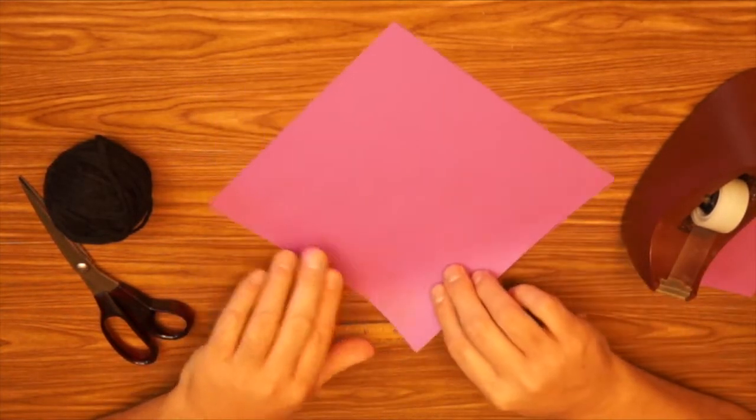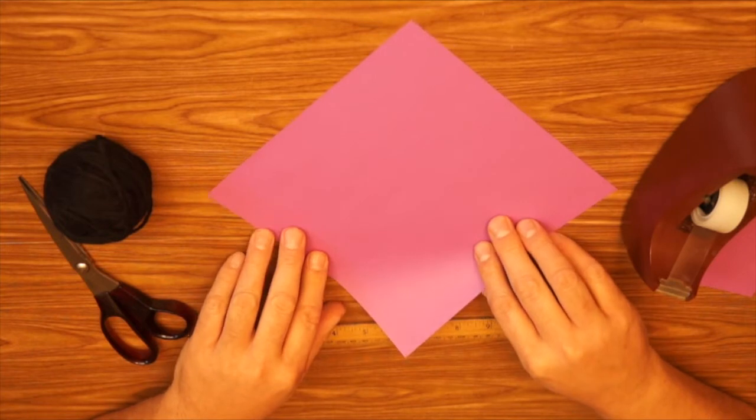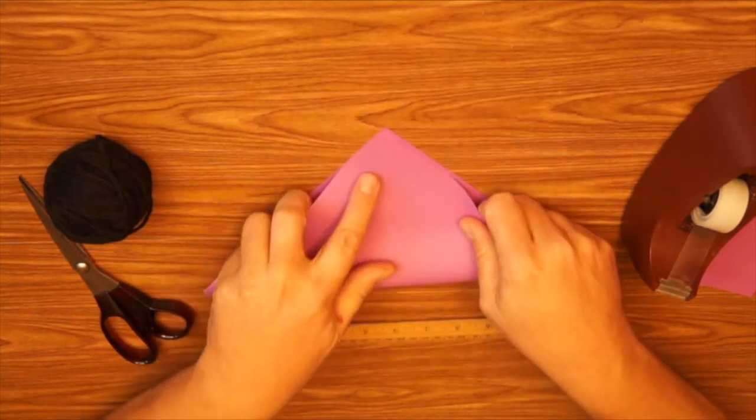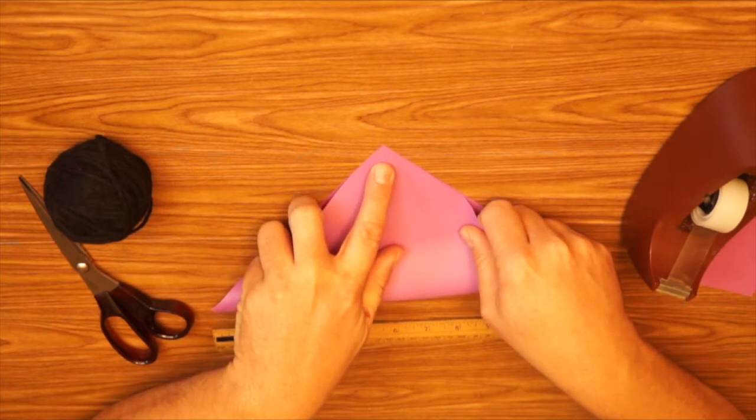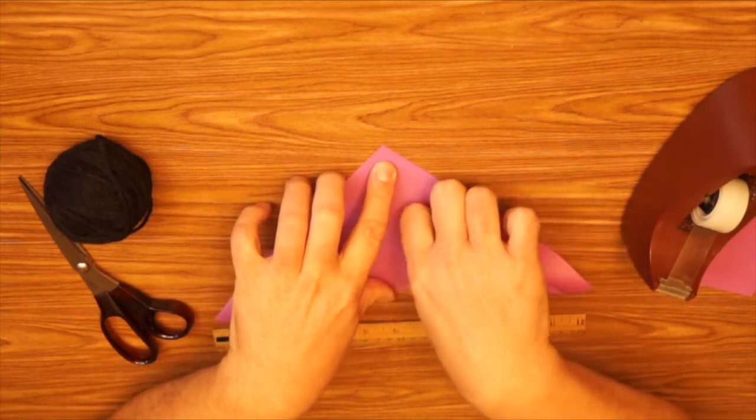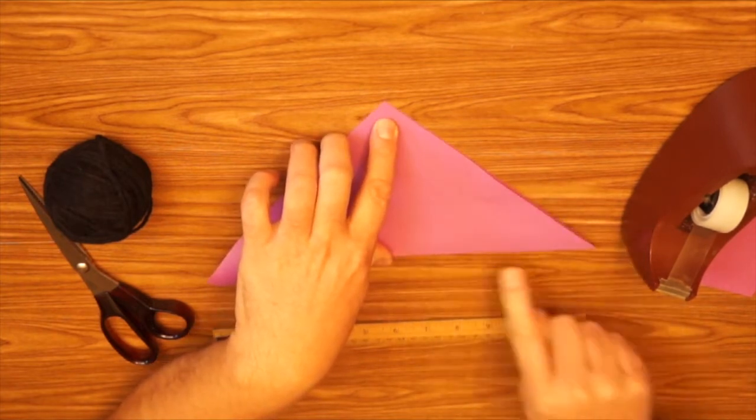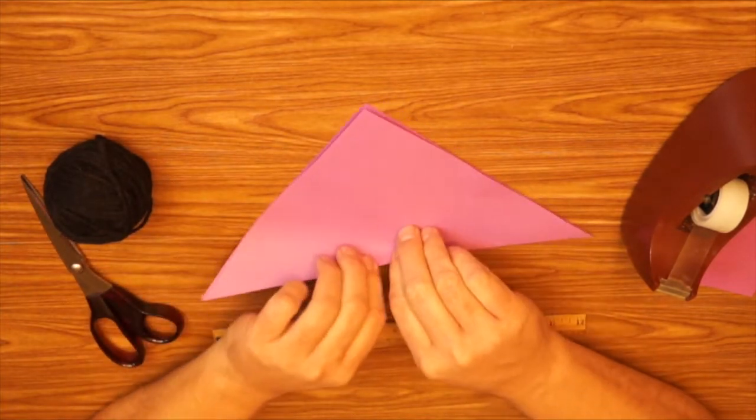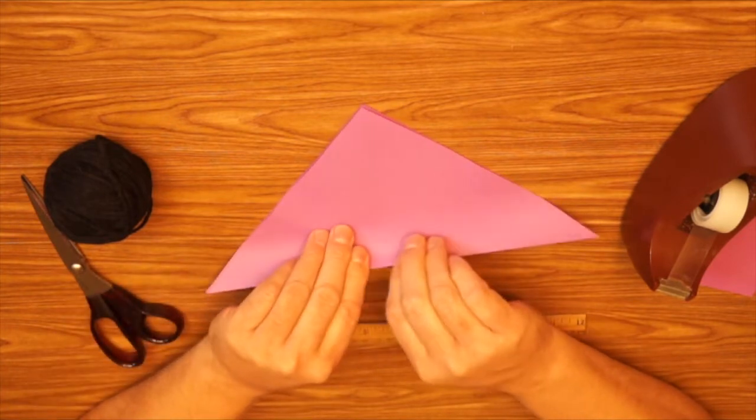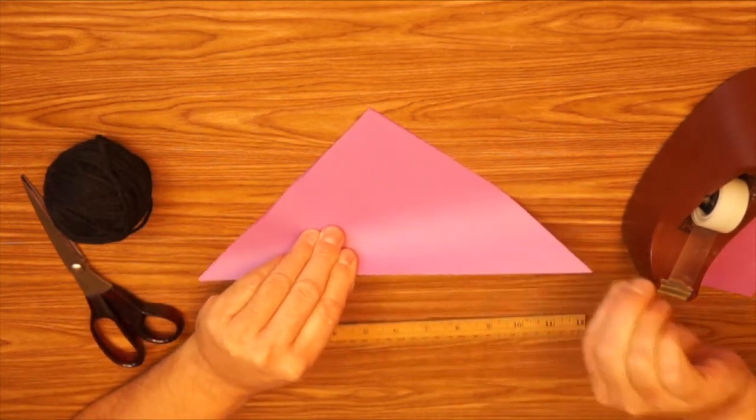So I'm going to take my square. I'm going to turn it like a diamond. And I'm going to fold the bottom to the top. Try to fit it inside the top. And line up your edges as best you can. And press down good on your folds. For this we want to have nice sharp creases. And the way you do that is to press good on your folds.